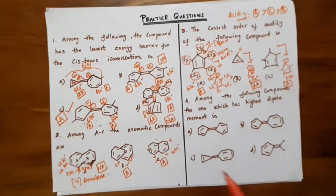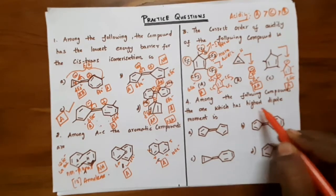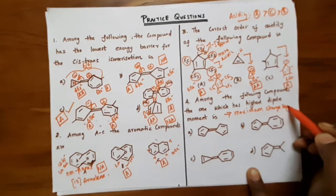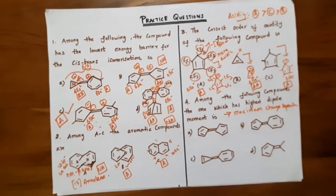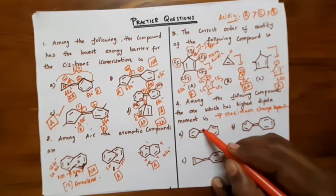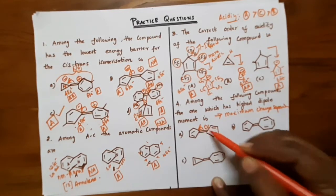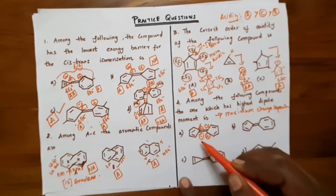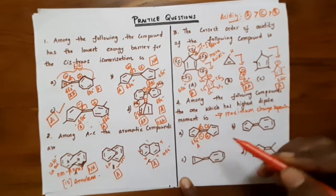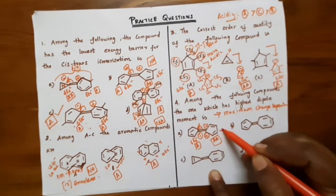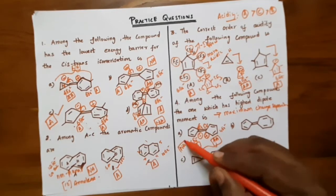The fourth question: among the following compounds, which one has the highest dipole moment? Highest dipole moment means maximum charge separation. These are fulvene-type compounds where two rings are connected by an exocyclic bond. Breaking the bond gives one part negative and one part positive. In option A, both rings are the same: one part has 6 pi electrons (aromatic) and the other has 4 pi electrons (anti-aromatic), so the entire system is non-aromatic.